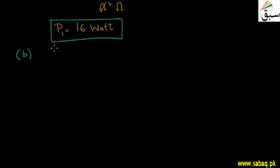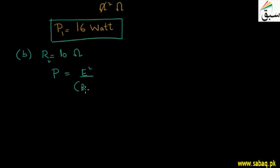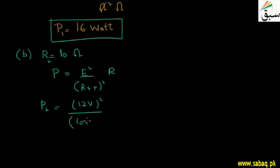Now for case 2, when the resistance of the external device is 10 ohms, we use the same formula: P equals E squared divided by (R plus r) squared, into R. We put in the values: 12 volts divided by (10 ohm plus 2 ohm) squared, into 10 ohm.